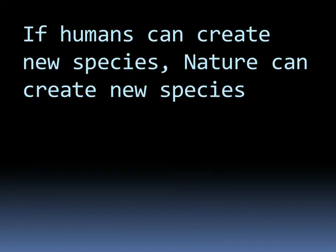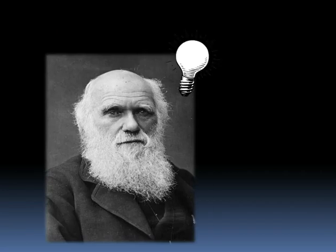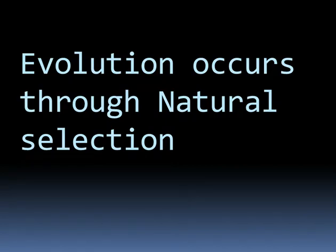Darwin thought to himself, if humans could use the process of artificial selection to change species over time, it should be able to occur in nature. He came up with the theory that evolution occurs through natural selection.